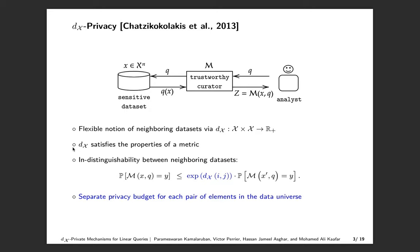Here, DX satisfies the properties of a metric such as non-negativity, symmetry, and the triangle inequality. With this generalized notion of neighborhood using the DX metric, we say that a mechanism M is DX private if for all neighboring datasets X and X' that differ only in the (i,j)-th entries, the randomized response for any query Q varies only by a multiplicative factor of the exponential of the DX distance between the i-th and j-th elements of the data universe. Here, we have a separate privacy budget for each pair of elements in the data universe.